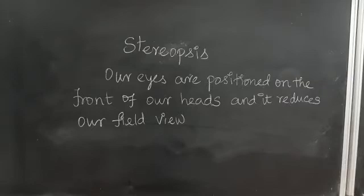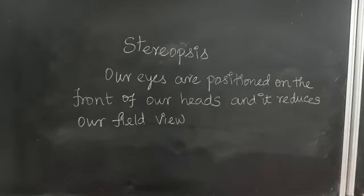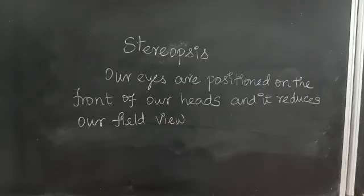We have two eyes in front of our head, and we can see 180 degrees — that is our field of view. For example, some prey animals have eyes on opposite sides of their heads, which gives them the advantage of seeing 360 degrees, so they can easily escape from enemies if they are going to attack.